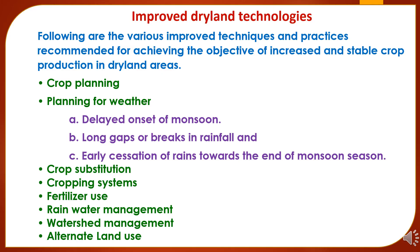Now to study the improved dryland technologies. Various improved techniques and practices are recommended for achieving increased and stable crop production in dryland areas. These include: first, crop planning with efficient planning according to nature; second, planning for weather factors like delayed onset of monsoon, long gaps or breaks in rainfall, and early cessation of rains towards end of monsoon; third, crop substitution; fourth, cropping systems; fifth, use of fertilizers; sixth, rainwater management; seventh, watershed management; and eighth, alternate land use.